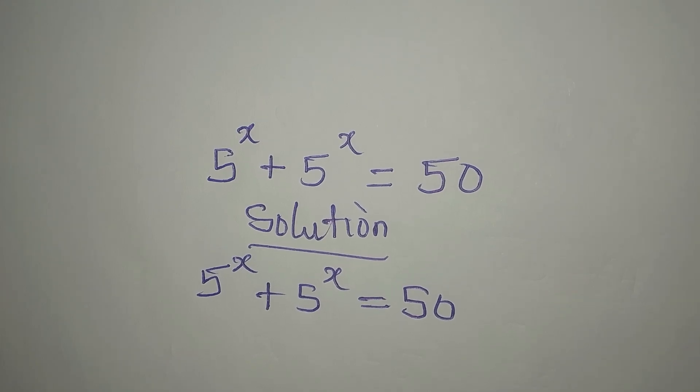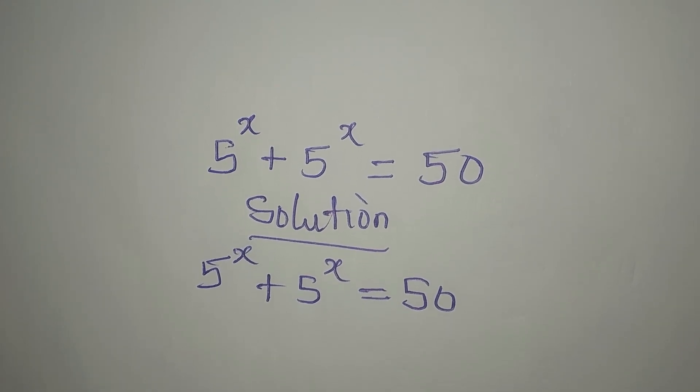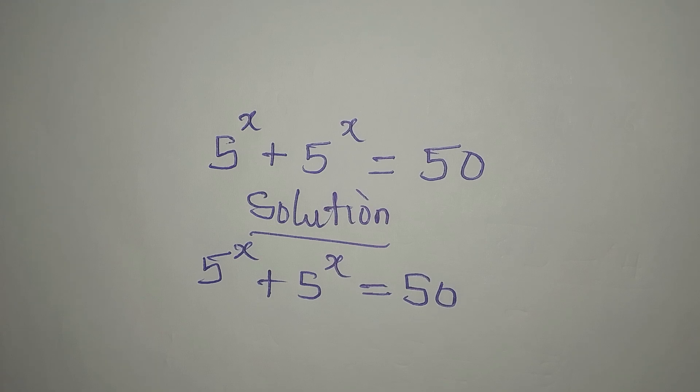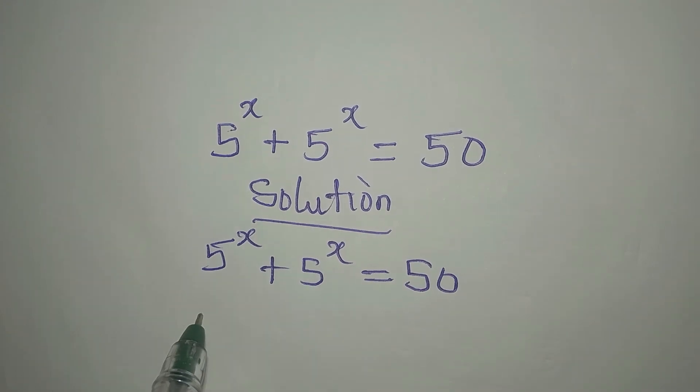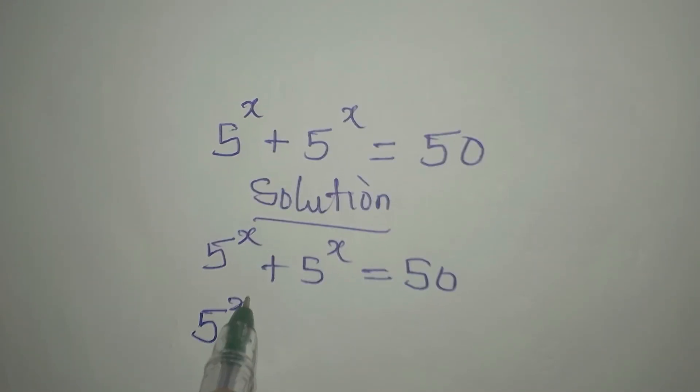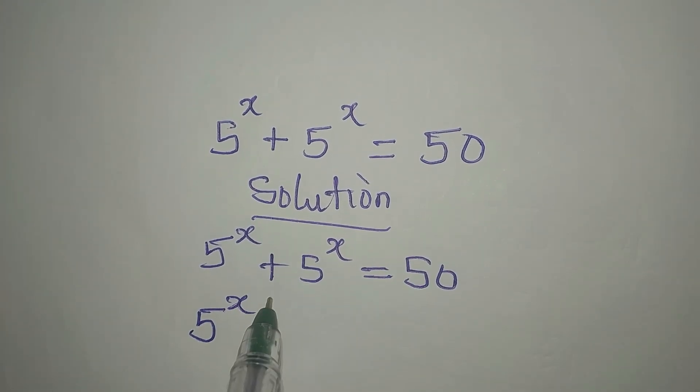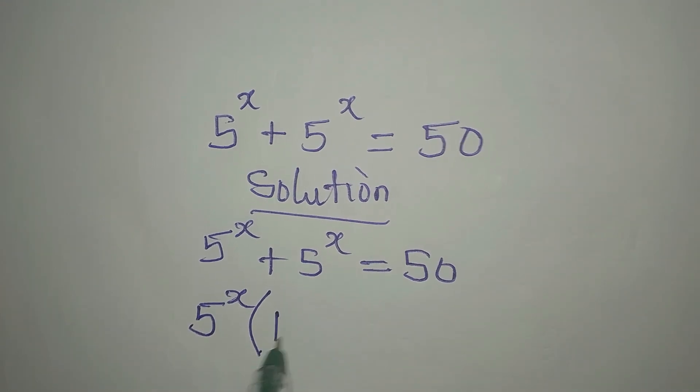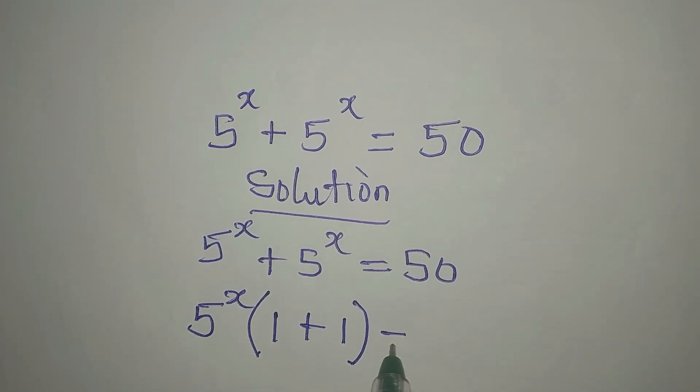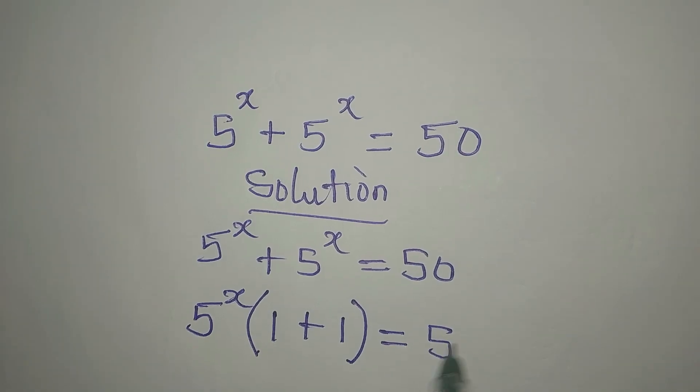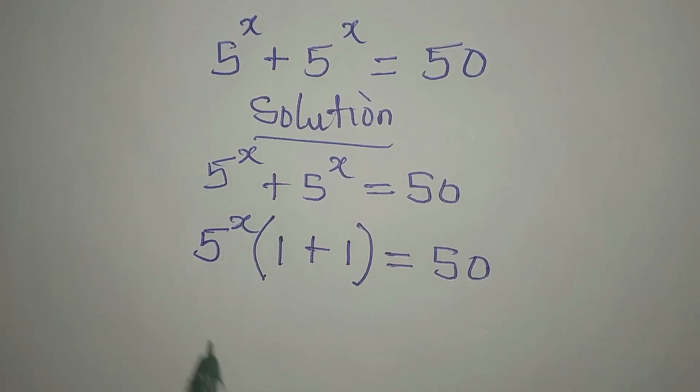Now this is very simple. We have the same term on the left, so we can add them or better still, factorize 5 to the power of x. Then here we're going to have 1 plus 1, and this will be equal to 50. If we take a step further, 5 to the power of x multiplied by 2 is equal to 50.